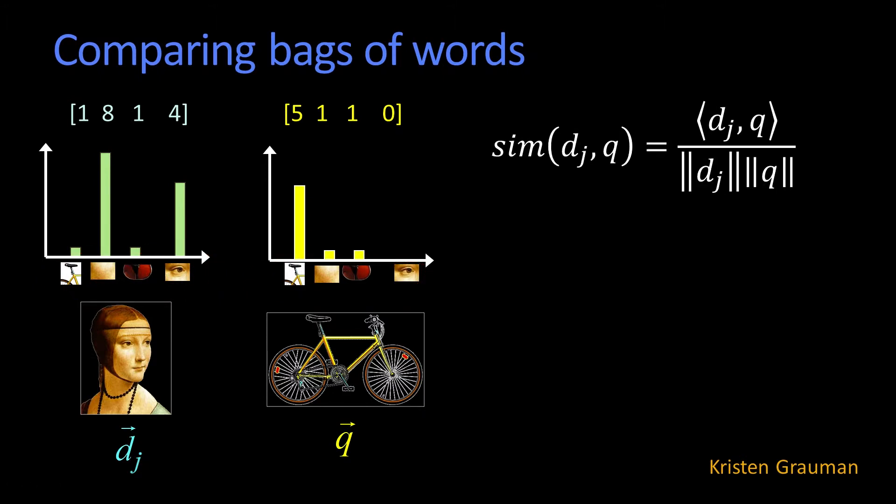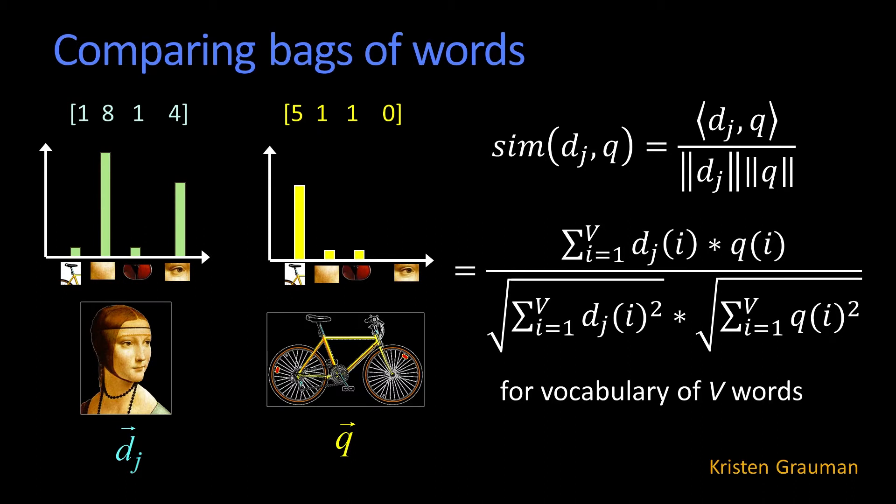And I'm just going to compare a similarity. So here's one example where I take the dot product between d and q, divide by the length, and that's essentially giving me a similarity between them. And this is just written out for i equal 1 to v, where the idea is that you have v number of words.